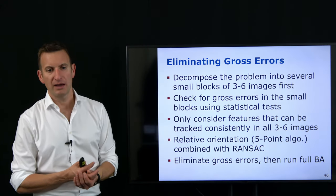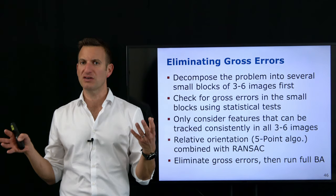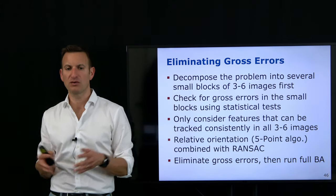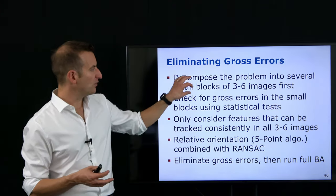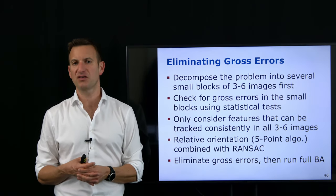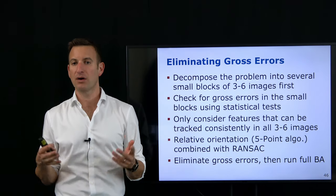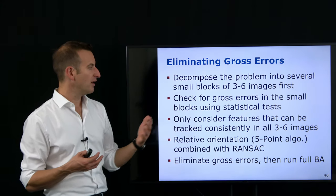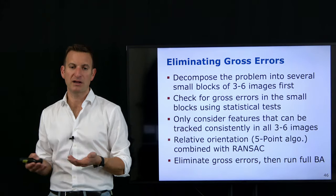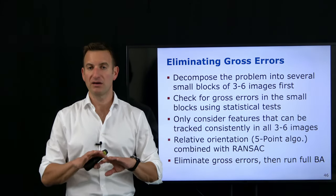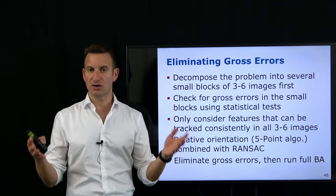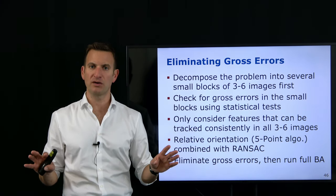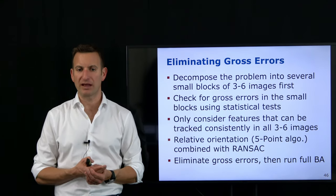We are typically not solving the whole bundle adjustment problem at once. Instead, we break this down into small blocks — typically around six images — solve a small problem within those six images, and look for statistical errors in this small set. If through a statistical test a point appears to be bad, we eliminate it, removing it from our observations to avoid taking a wrong data association into account. It's typically fine to ignore a few points if we can ensure an outlier-free situation.